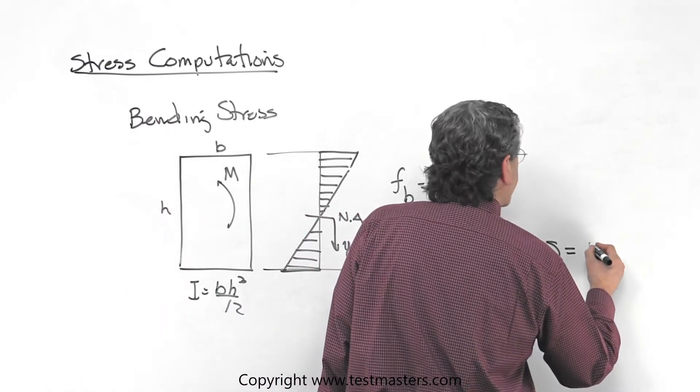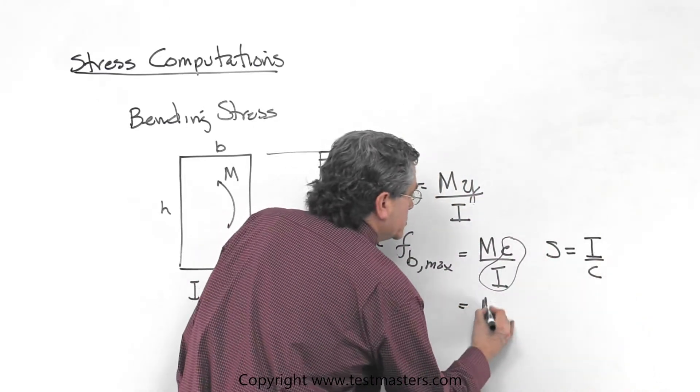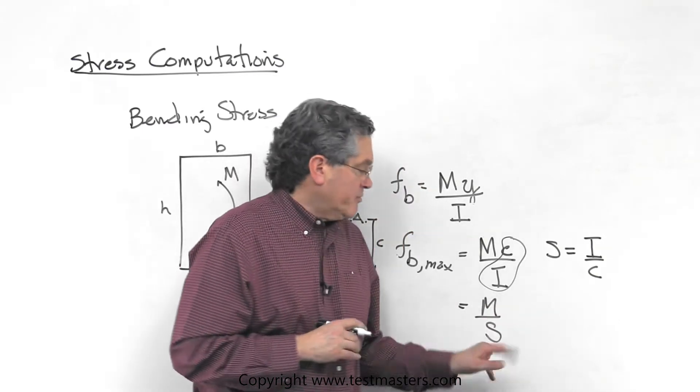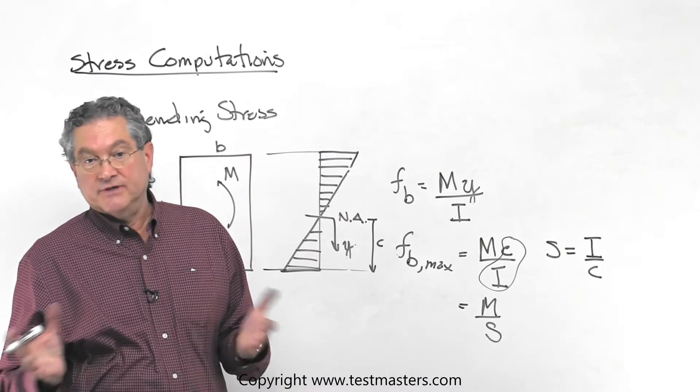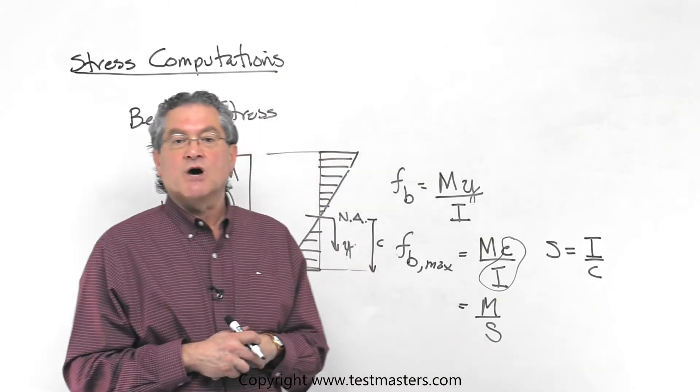And that's just I over c. So now what you can do is rewrite it and take your moment, divide through by the elastic section modulus. So the section property we do use in bending is the elastic section modulus.